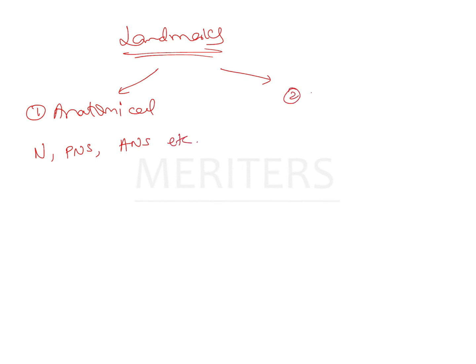There are certain landmarks which are not anatomical; rather they are derived — meaning they are arbitrarily obtained secondarily from anatomical structures. An example of this would be the gnathion. The gnathion is not actually an anatomical point; it is the midpoint between the pogonion and the menton. Such derived landmarks include the gnathion, the articular, point S, PTM, etc.